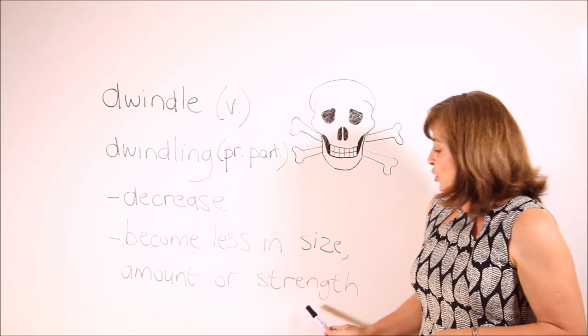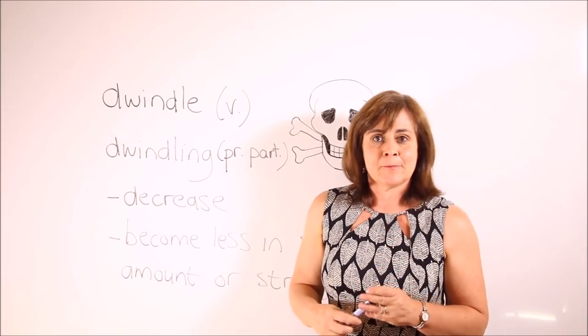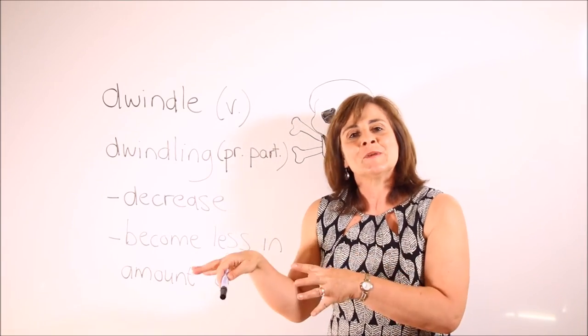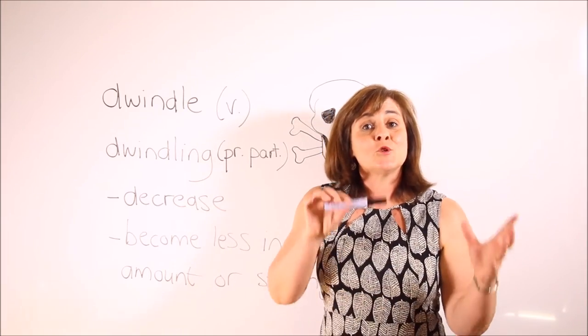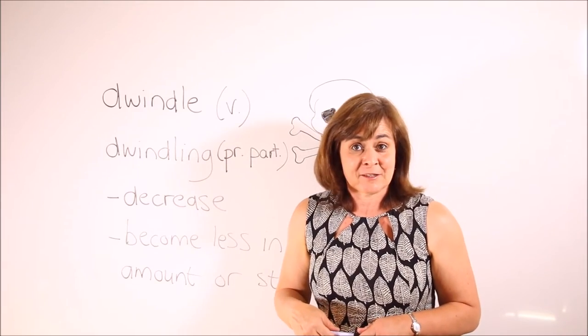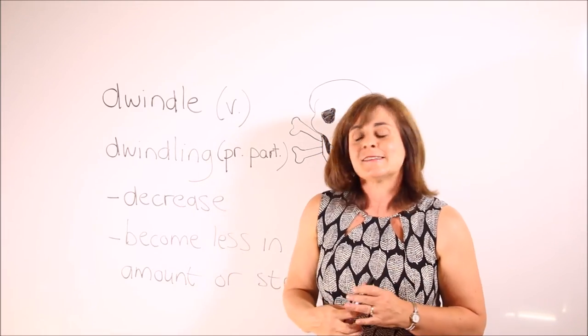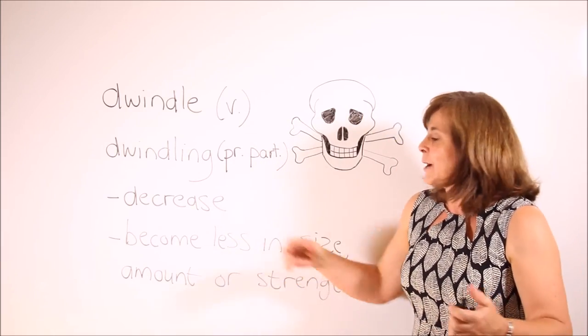We also use the present participle 'dwindling.' The numbers are dwindling, in that case dwindling forms part of the verb, or the dwindling numbers, in that case the present participle acts as an adjective. But in both cases there's the sense that something is decreasing, it's becoming less.